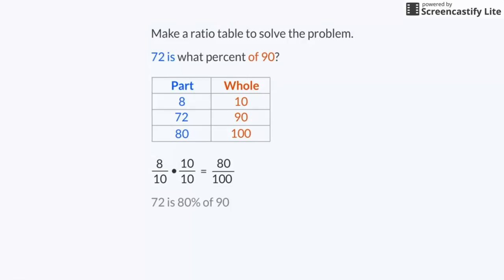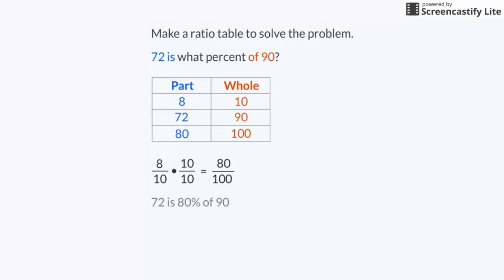So, the part in the table is 80. This means that 72 is 80% of 90.